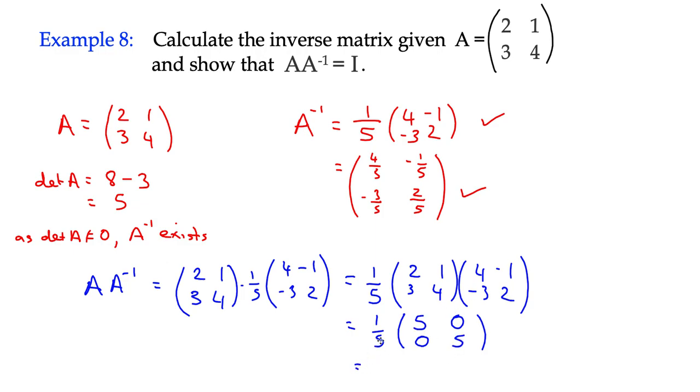And you can see here, if I multiply a 5th by each of the elements in the matrix, I get 1, 0, 0, 1, which of course is I.